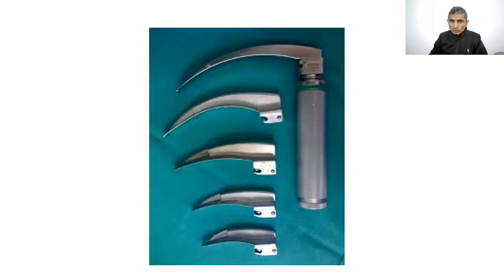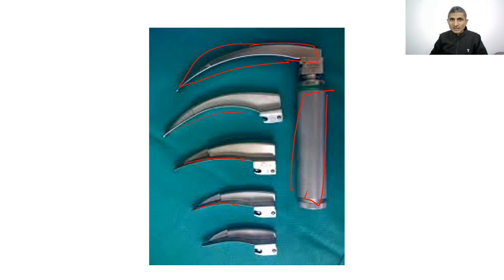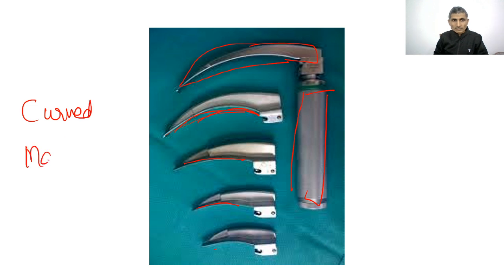This is a laryngoscope handle. Different blades produce different types of laryngoscopes. The Macintosh laryngoscope has curved blades of different sizes and is the most commonly used for intubation, particularly in adult patients.